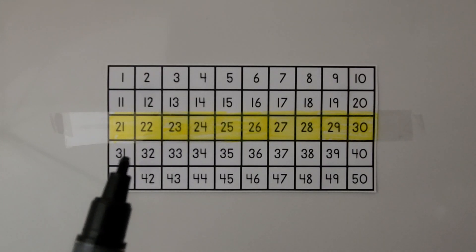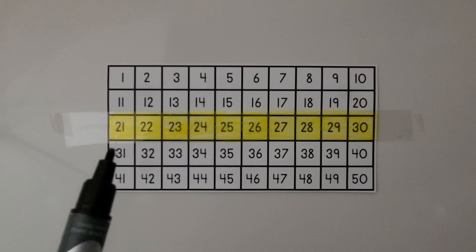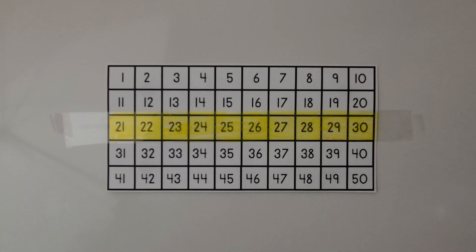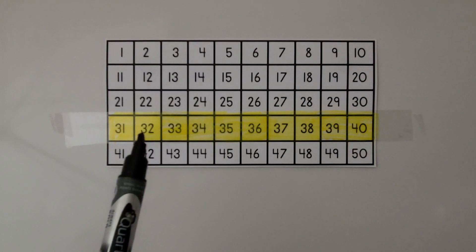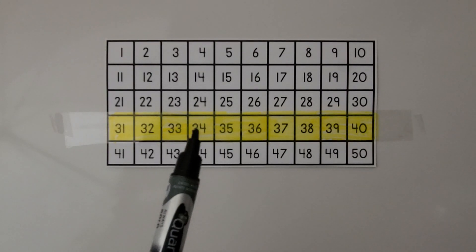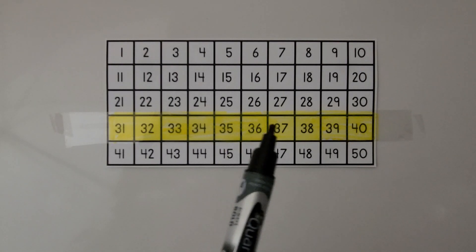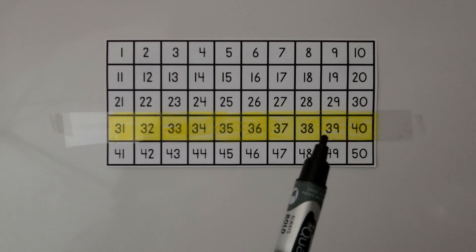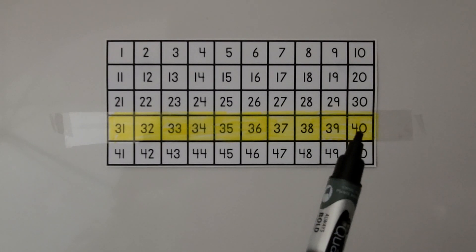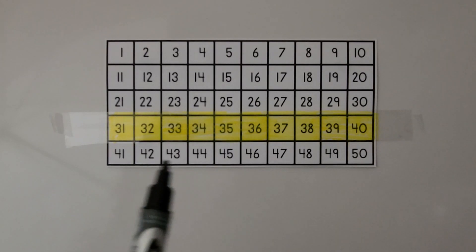So after reading 30, we go to the next row below and start counting: 31, 32, 33, 34, 35, 36, 37, 38, 39, 40. The numbers that begin with a 4 are read as 40, and then that number.